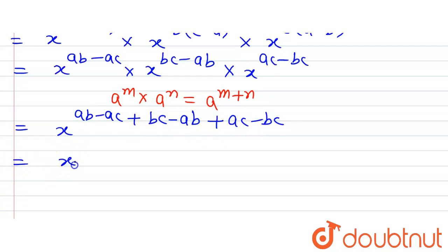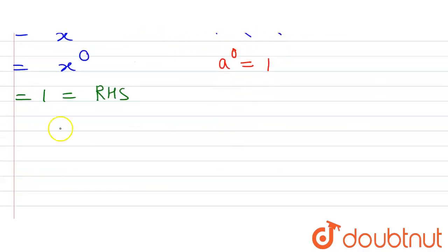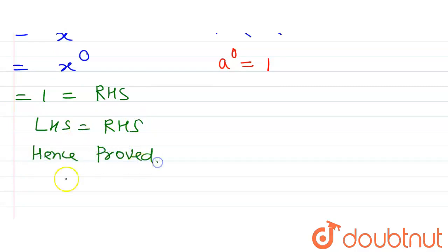Observing the exponent: ab is cancelled by −ab, bc is cancelled by −bc, and ac is cancelled by −ac. So we have x raised to the power 0. We know that any number raised to the power 0 equals 1, so x^0 = 1. Since 1 is the right hand side of the equation, we have proven that LHS equals RHS. Hence proved.